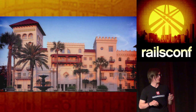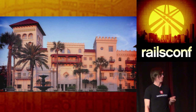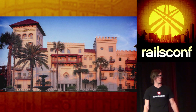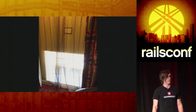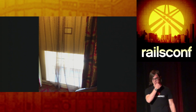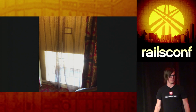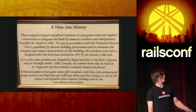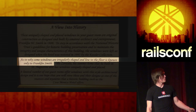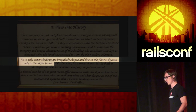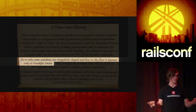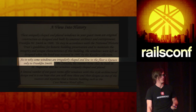Ancient City Ruby was at the Casa Monica in St. Augustine — beautiful on the outside, absolutely gorgeous, really nice architecture throughout the whole place. We walk into the room, and this is our window — it's like three feet tall, this little square window, the room is all dim. There's a little plaque that says: 'These uniquely shaped and placed windows... as to why some windows are irregularly shaped and low to the floor is known only to Franklin Smith,' who was the amateur architect that designed the building. He was really into the outside of the building and not so much the inside, at the expense of his users.